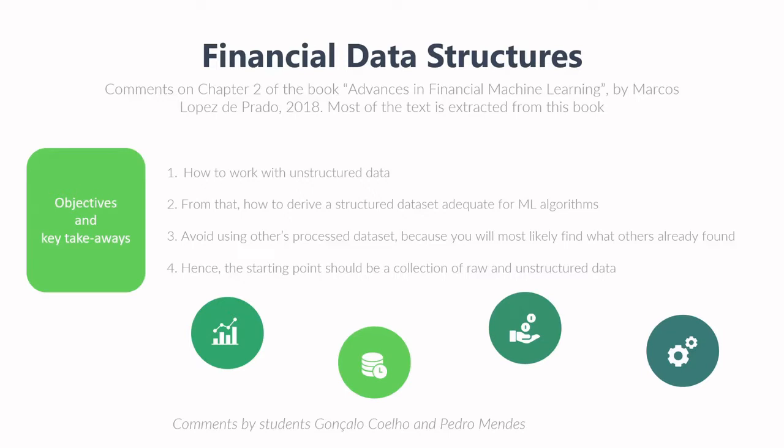The objectives and key takeaways from this chapter: first, it helps us understand how to work with unstructured data and from that how to derive a structured dataset adequate for machine learning algorithms. It is very important that we avoid using others' processed datasets, because one will most likely find what others have already found, so there is no usefulness in that information. The starting point should really be a recollection of raw and unstructured data.